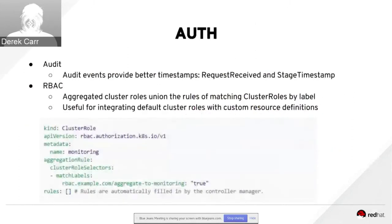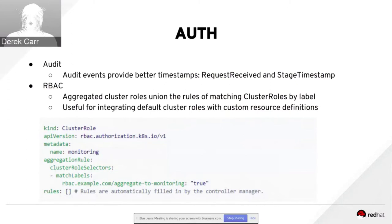Moving on to SIG Auth — highlighting two items. There was work done around auditing to provide better clarity on timestamps when logging audit events. Previously when an audit event was recorded, you didn't have two timestamps to know when the request was received versus where it was in the auditing stage. Now there are distinct timestamps to track both, giving better granularity into your audit logs.